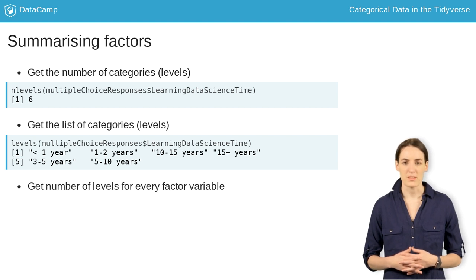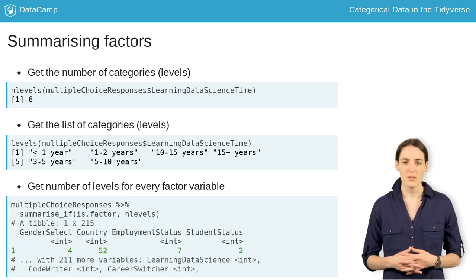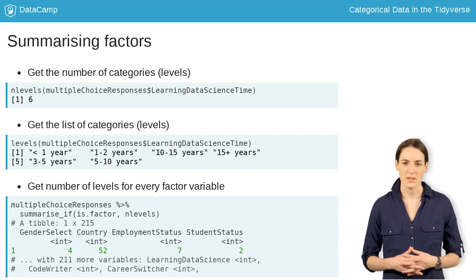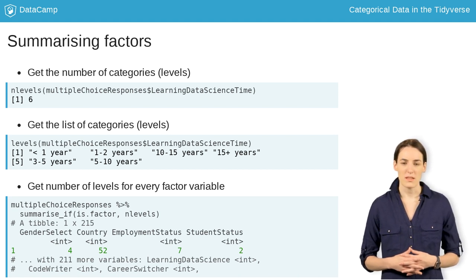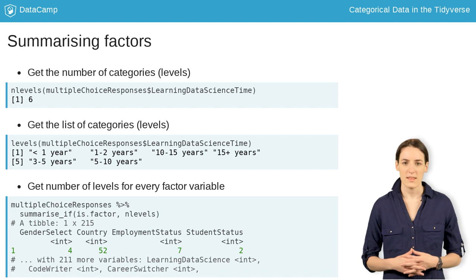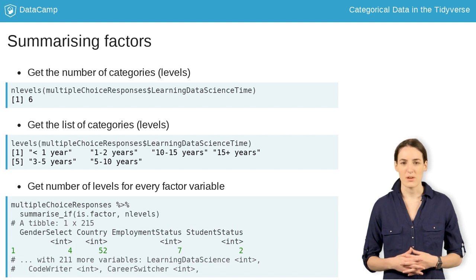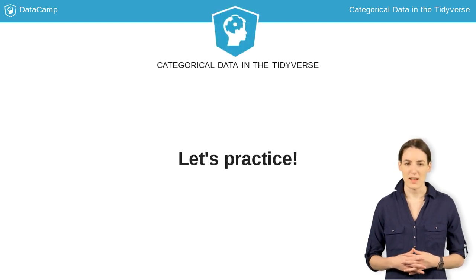What if we want to scale up and check the number of levels for all factor columns in a dataset? You've probably used dplyr's summarize before to take summary information, like the mean, of a single column. If we want to apply a summary function — meaning one that returns a single number — to all columns that meet a certain condition, we can use dplyr's summarize_if. This works just like mutate_if. We first check if the column is a factor and, if it is, get the number of levels. Time to put this into practice!